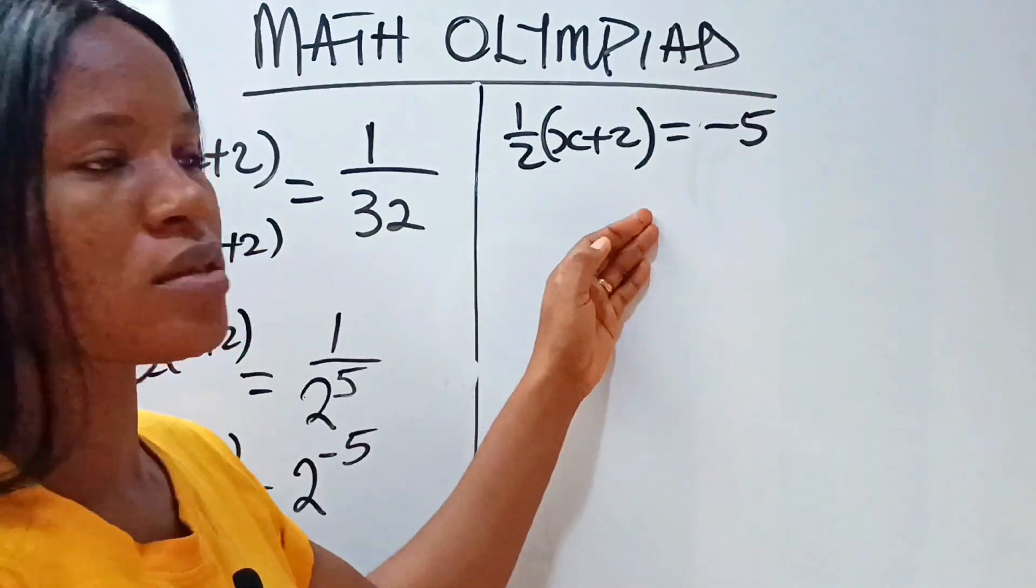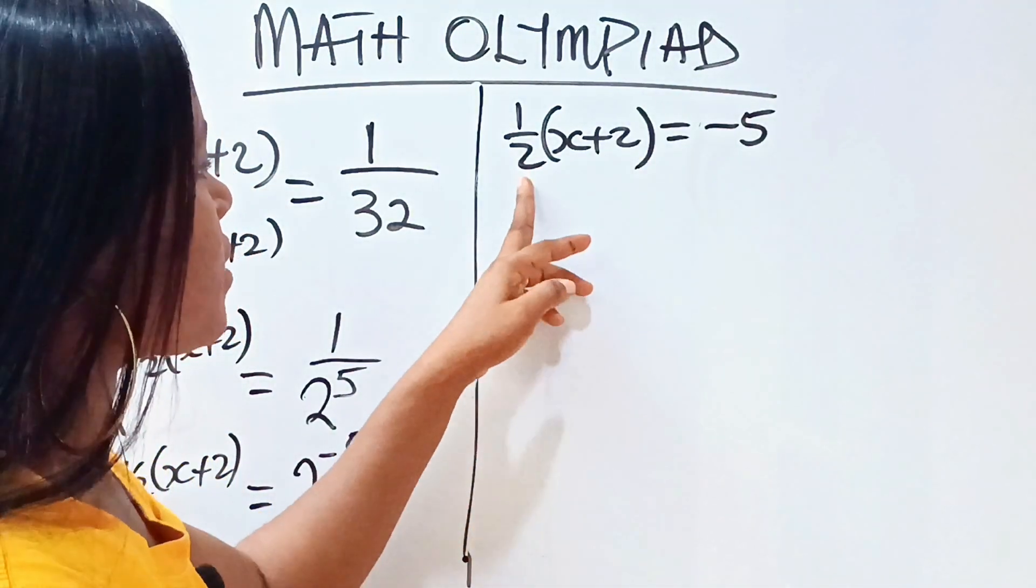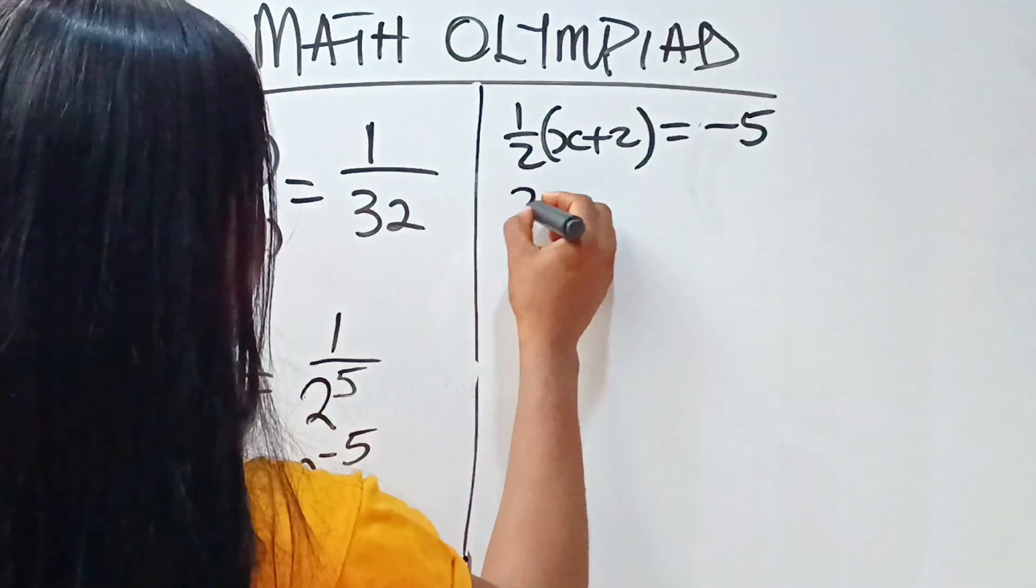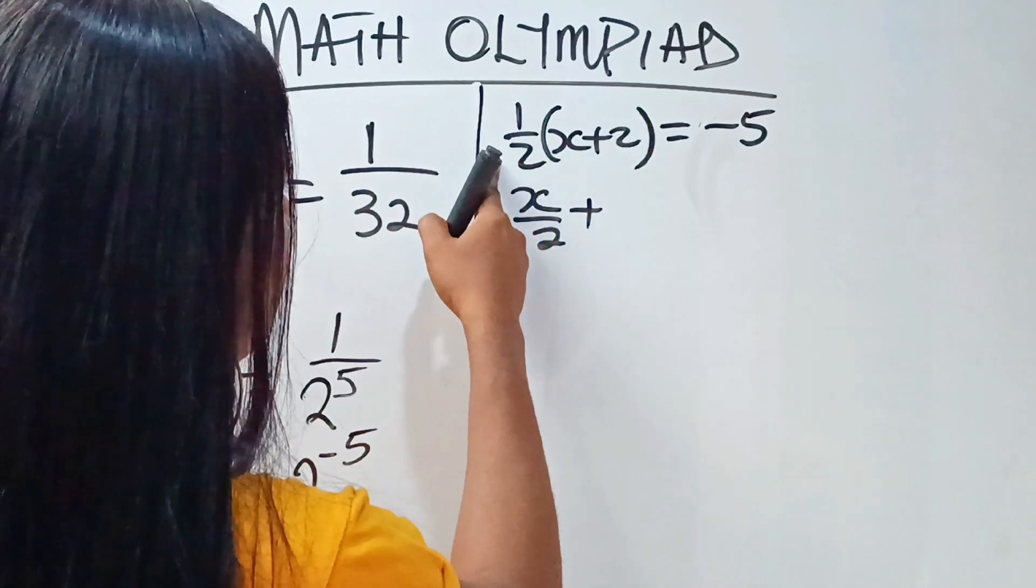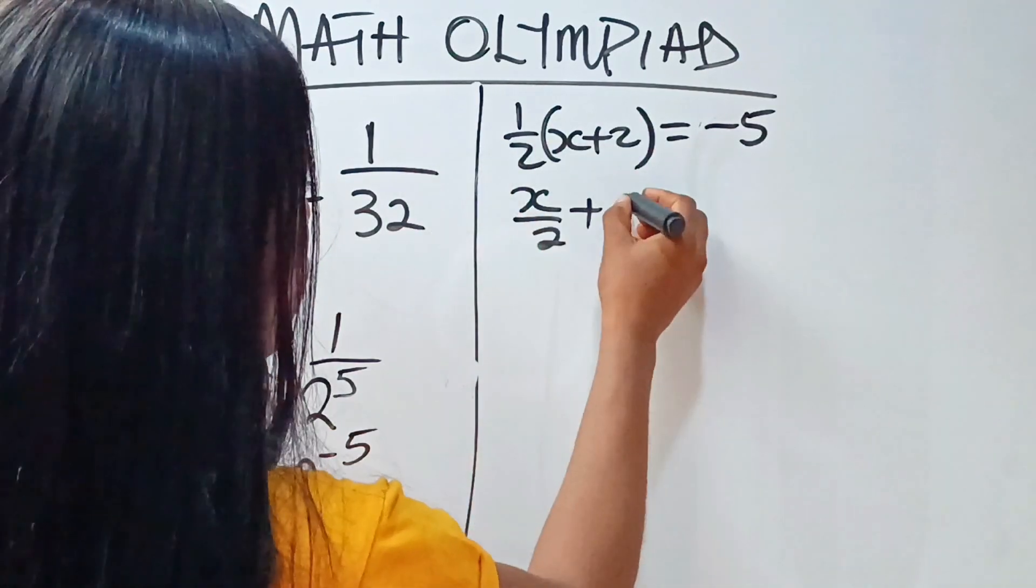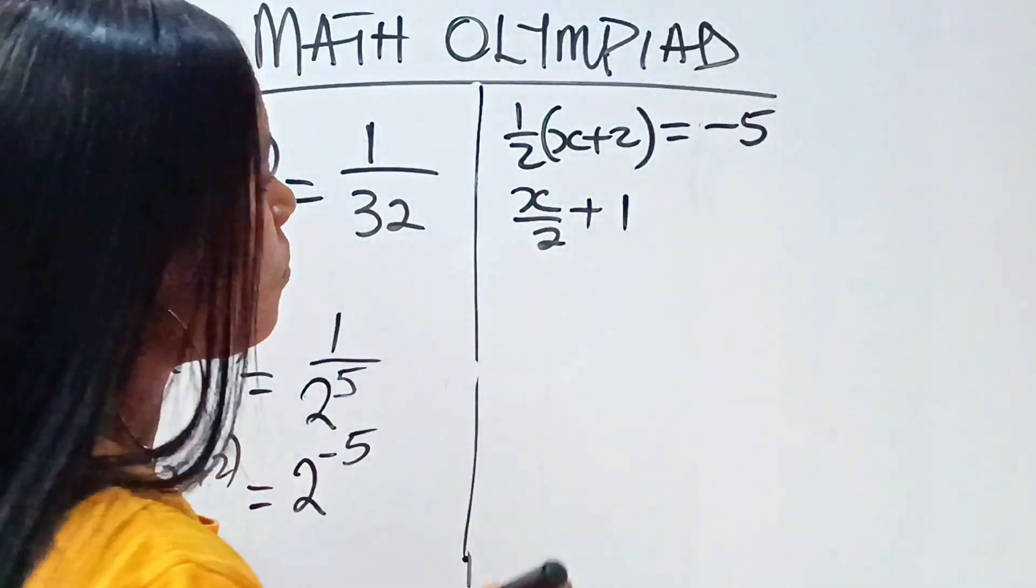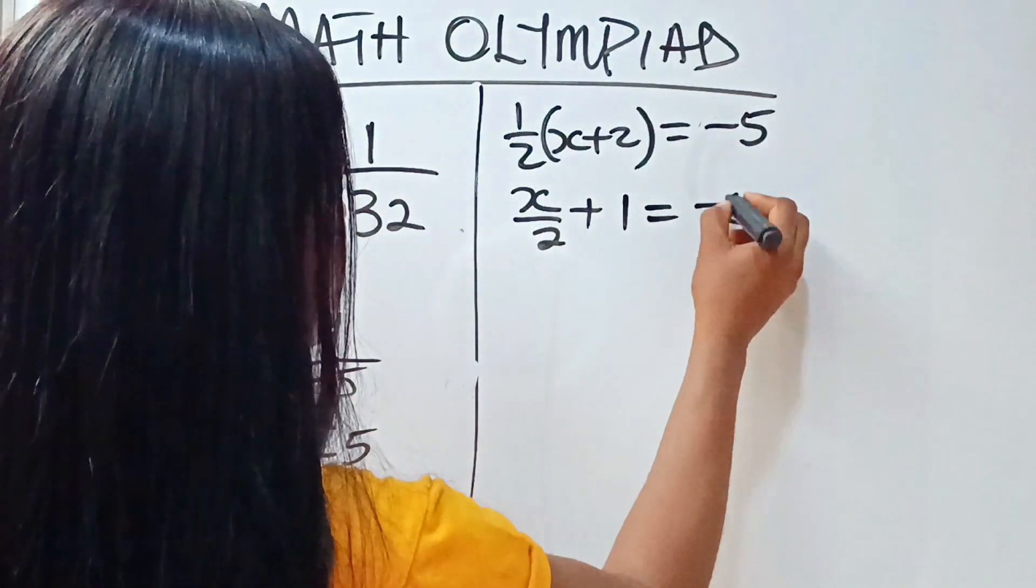Okay. So let's open this bracket. Half times x is x over 2 plus 2 times half is the same thing as 1. Is equal to minus 5.